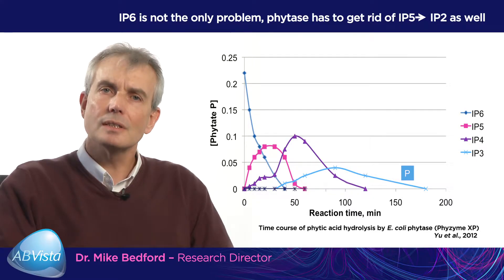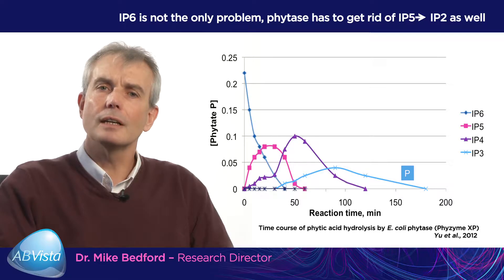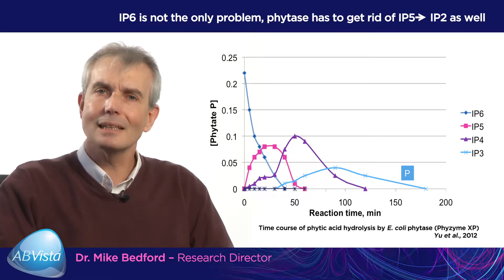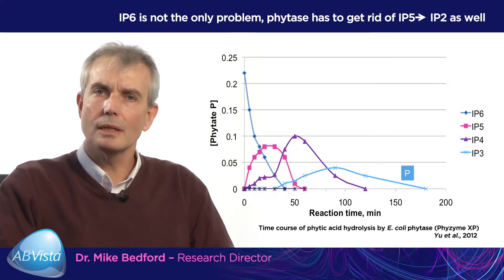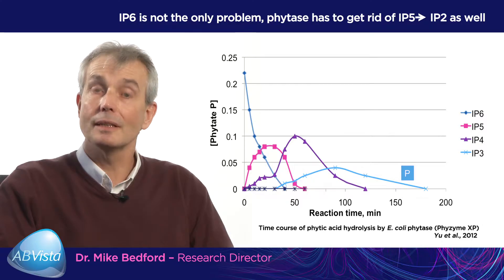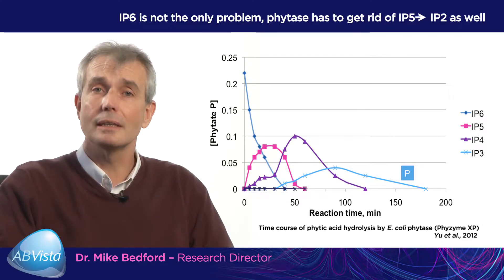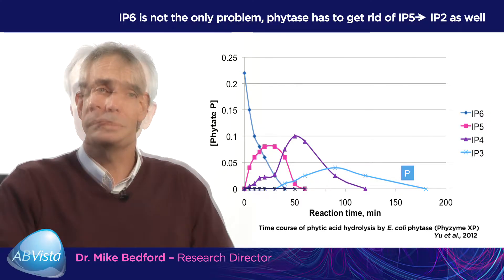You can see the rate at which the enzyme is attacking IP4 and IP3 is quite slow, particularly for IP3. That means you see a build-up of IP4 and IP3 when we use phytase in the animal, and that's actually just been shown recently in in vivo experiments.